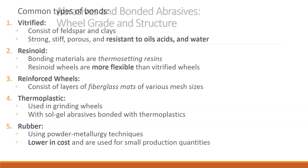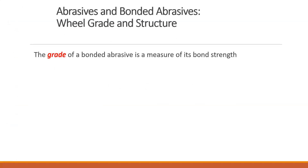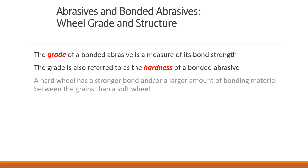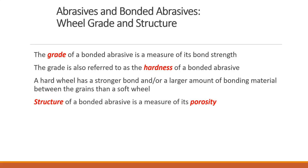When we think about how wheels are classified, a lot of it has to do with the type of bond, the type of grit, and the porosity. The grade of a bonded abrasive is a measurement of the strength of the bond — it tells you how hard the wheel is. We also talk about the structure of the wheel, which gives you the porosity.